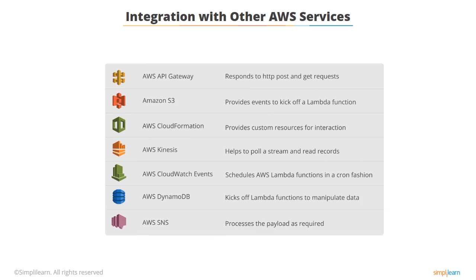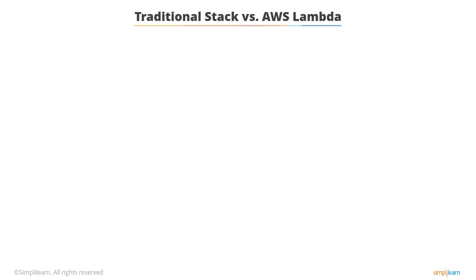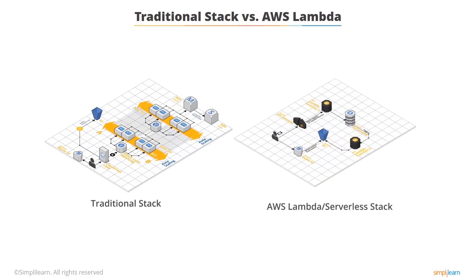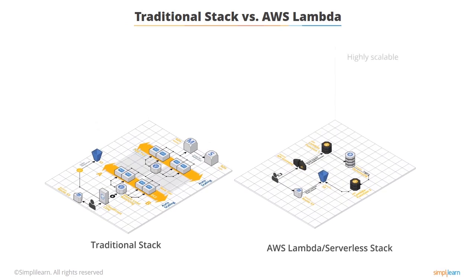There are several other integrations that AWS provides, and we will briefly go through these later in the course. How does Lambda compare to traditional stacks? AWS Lambda is a highly scalable service that provides reduced administration costs and simpler setup than traditional multi-tier application stacks. Comparing a traditional three-tier architecture to a Lambda or serverless application stack, we can see there are significantly fewer components to maintain, freeing you up to write code instead of managing operating systems and infrastructure configuration.